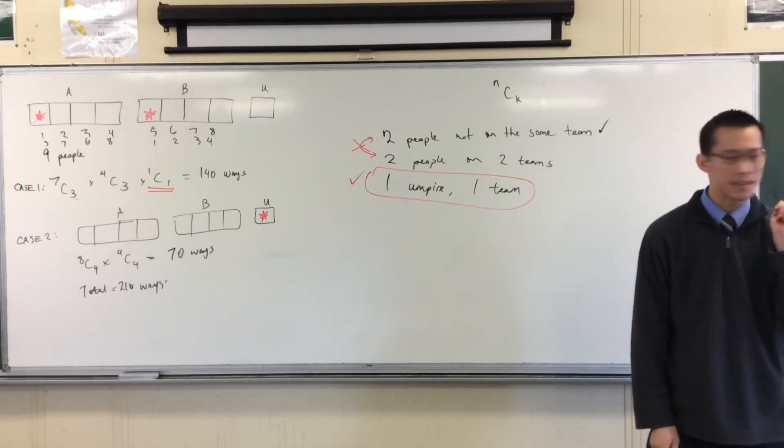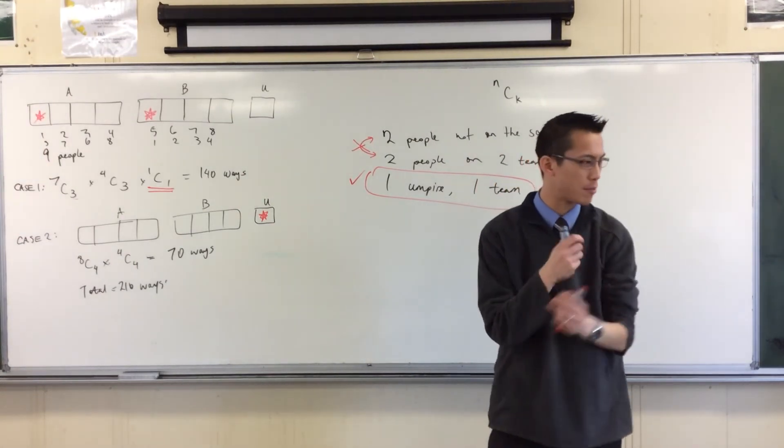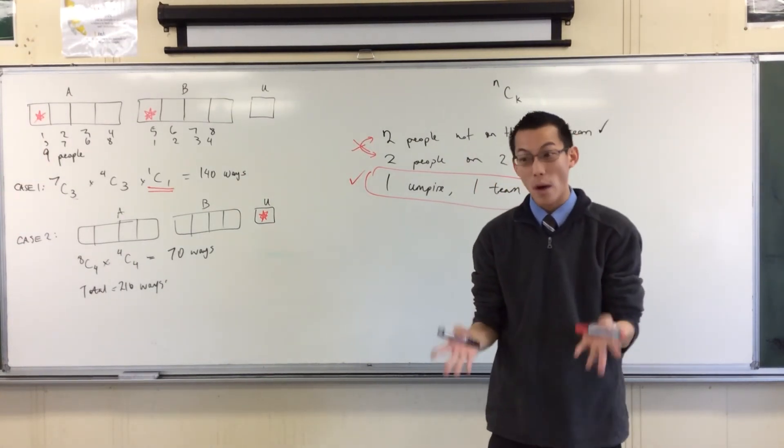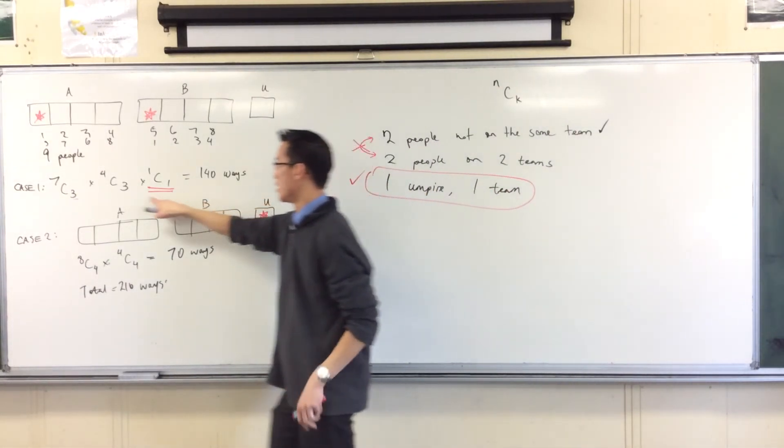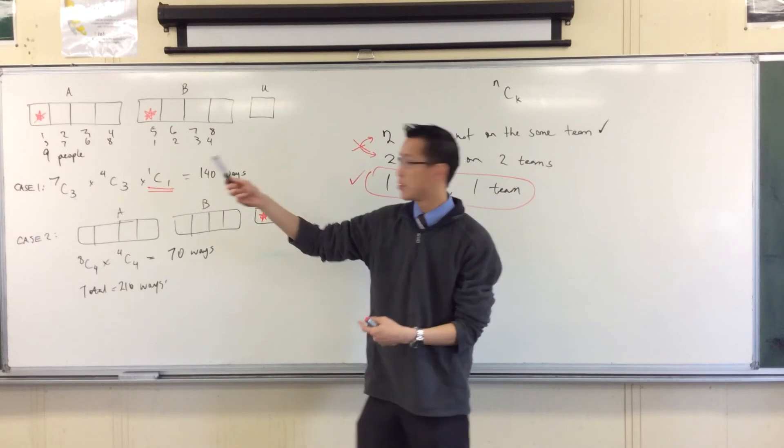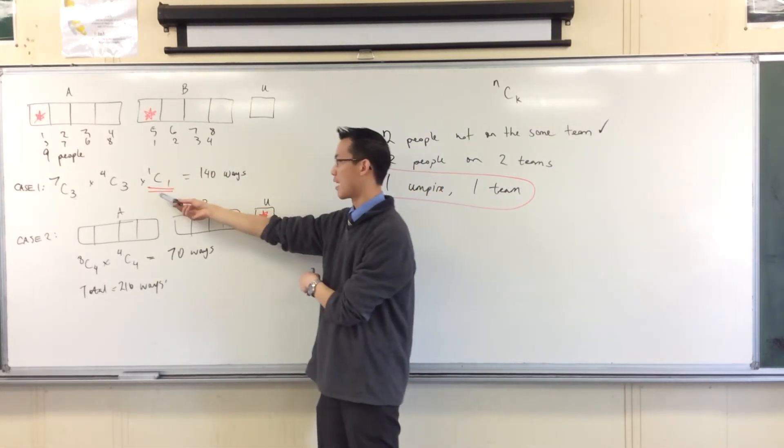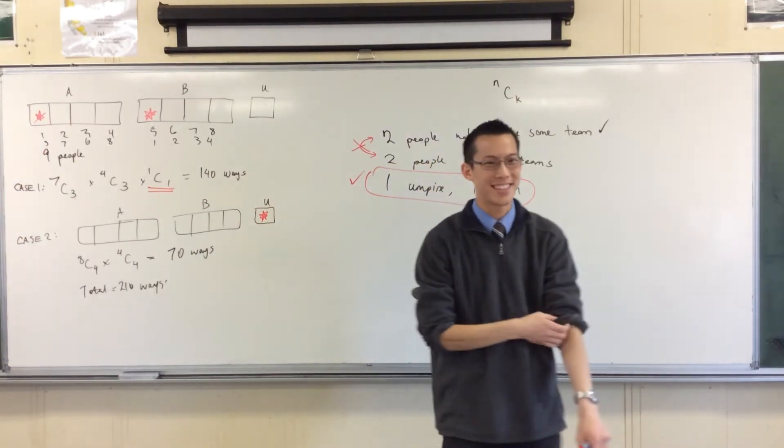By the way, one last thing. Not that it's that important, but just so you know, you probably already appreciate the fact that there's always lots of different ways to do questions. Just have a look at this line, the one we established yesterday. I went from left to right, and I left the umpire as the poor, unprivileged person. But it doesn't necessarily have to be.